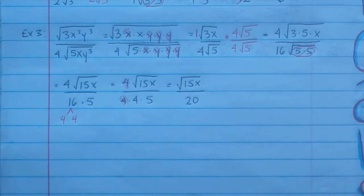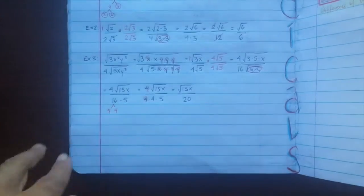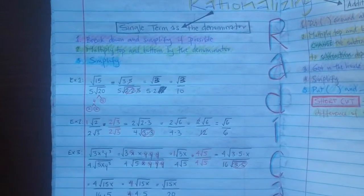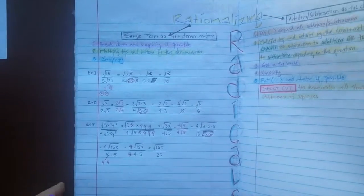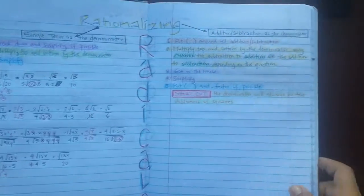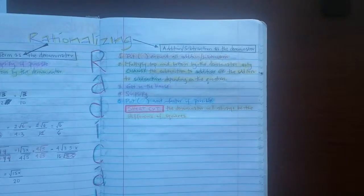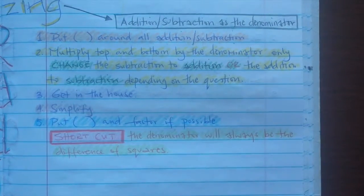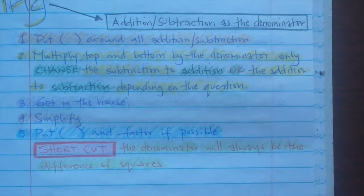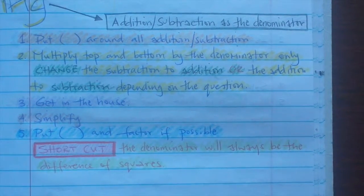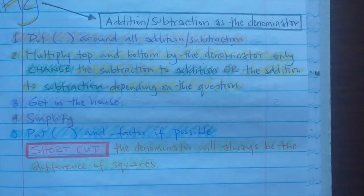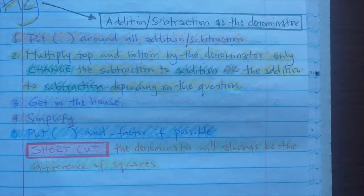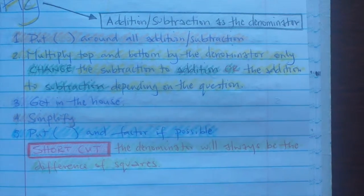This is a listening check — go ahead and color in that answer: radical 15x over 20. So what if the denominator wasn't just a single term? If you have addition or subtraction as a denominator, pause the video and copy those notes down.